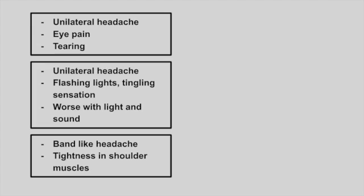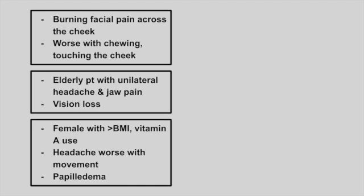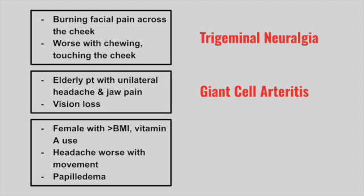Next is a patient with a unilateral headache, eye pain, and tearing — this is a cluster headache, treated with oxygen. Next is a patient with a unilateral headache, flashing lights, tingling sensation, worse with light and sound — this is a migraine headache. A band-like headache with associated tightness in the shoulder muscles is a tension headache. Burning facial pain across the cheeks worse with chewing or touching is trigeminal neuralgia. An elderly patient with unilateral headaches, jaw pain, and associated vision loss — this is giant cell arteritis.